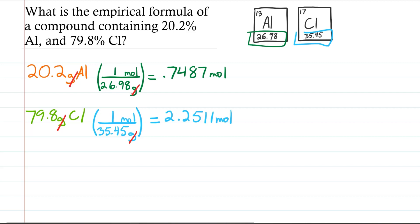So now we have our mole relationship between these two elements. But these numbers don't look that good. So the next step is to divide by the smallest of the two numbers. So we're going to divide both of these by the smaller of the two, that being 0.7487.